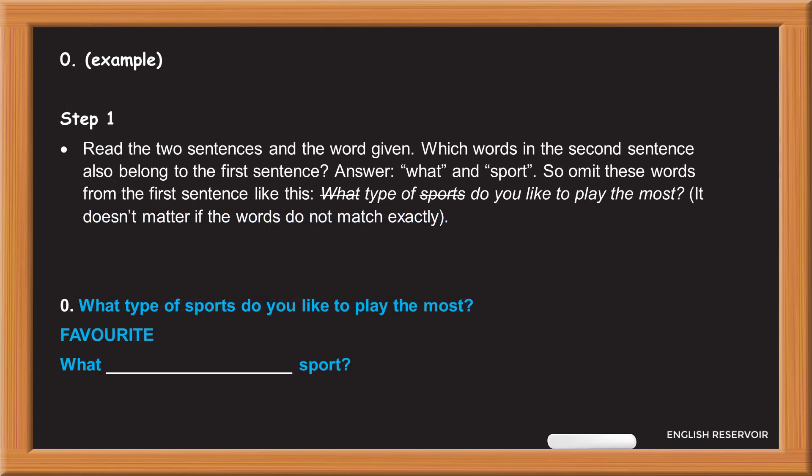Example. Step 1. Read the two sentences and the word given. Which words in the second sentence also belong to the first sentence? Answer: What and sport. So omit these words from the first sentence like this. It doesn't matter if the words do not match exactly.